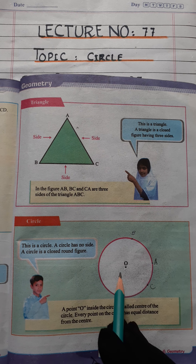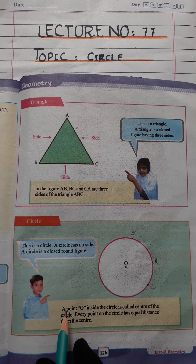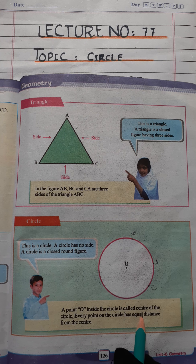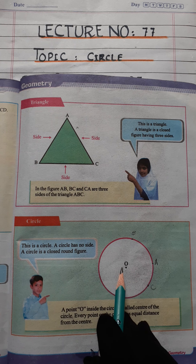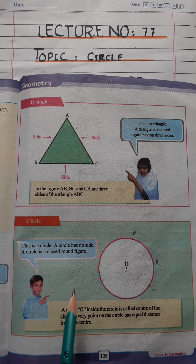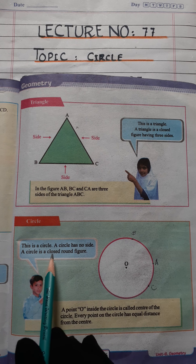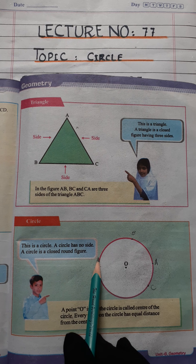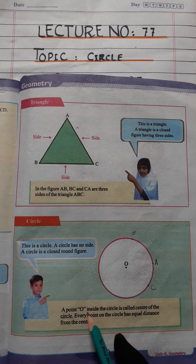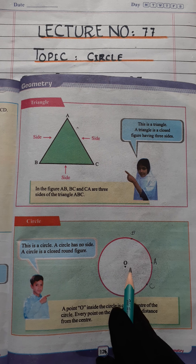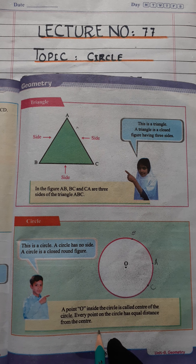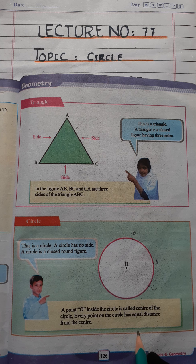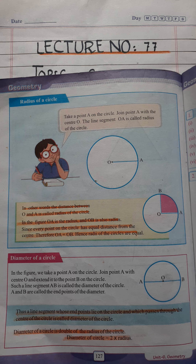This point O is called the center of the circle — this is an important point for you people from an objective point of view. Every point on the circle is at equal distance from the center of the circle.